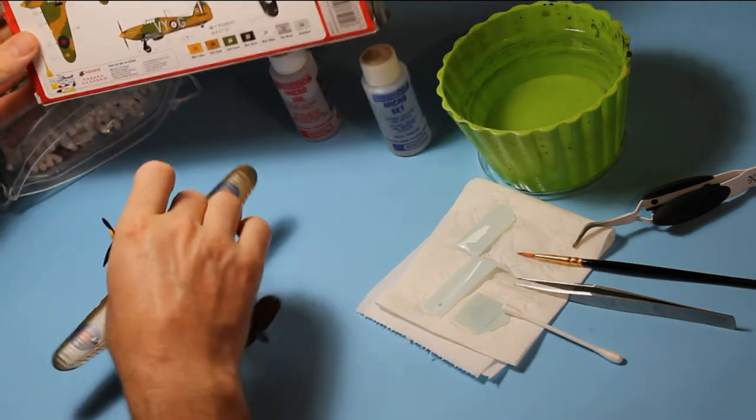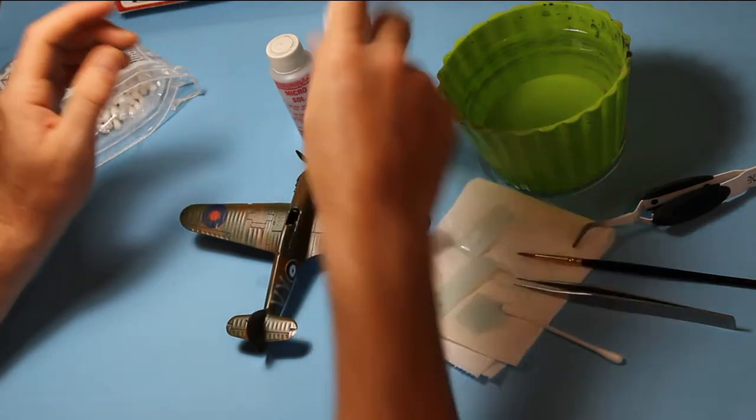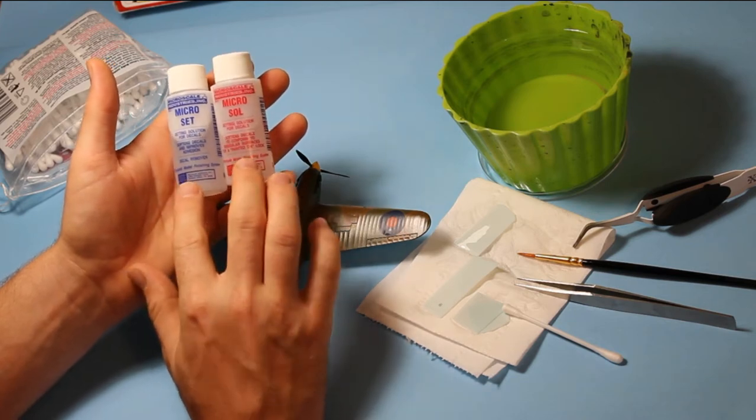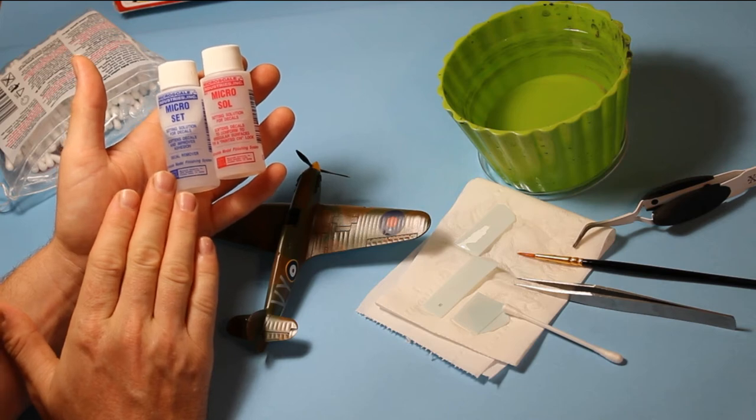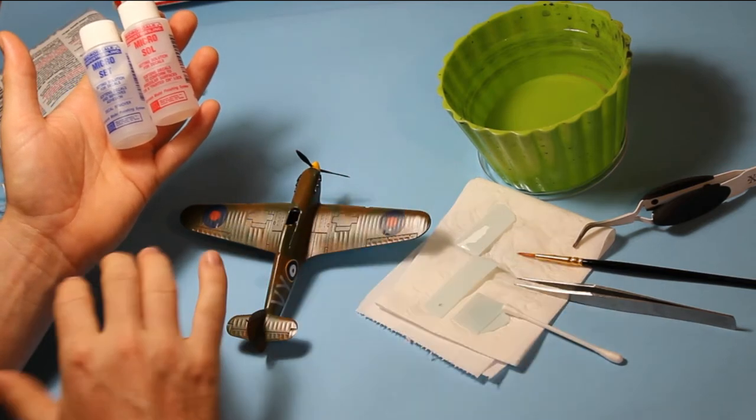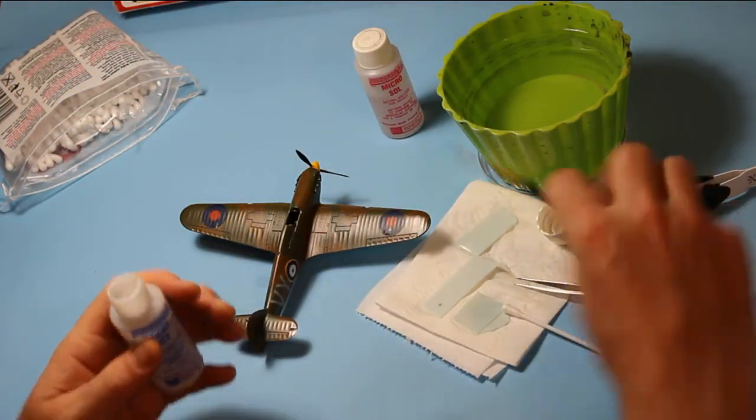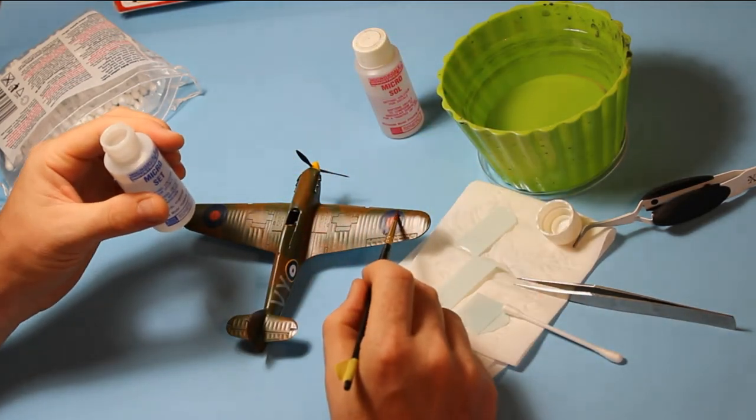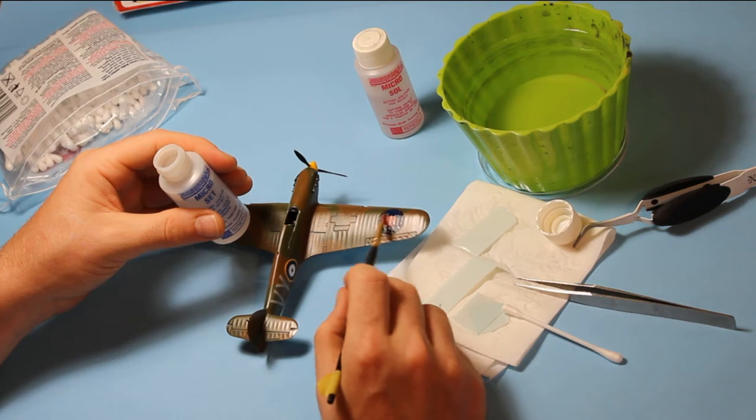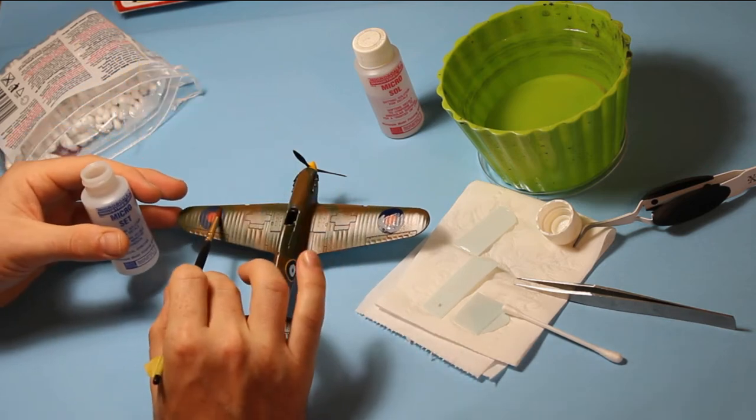I think that's the main ones for the top of the aircraft. So I am going to take this moment to put a bit of micro-set on. This is micro-set and micro-sole. They go together quite well. These are decal setting solutions. We start with micro-set. These all soften the decals and let them conform to the contours of the model. Micro-set is the one you start with. That works its way into the decal and starts to get the process going.